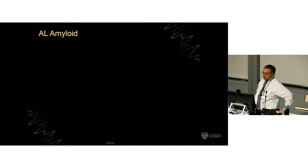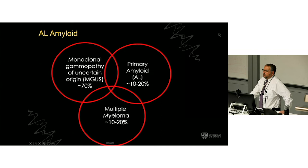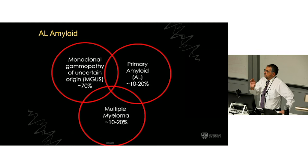If the bone scan is negative, it's highly likely to be the AL group of amyloid. Fundamentally, this is a multiple myeloma-type illness. What's important is that this is a clonal abnormality — one cell has gone mutant, become two, become four, become eight, become a billion. That clone makes the protein which in that person gelatinizes.